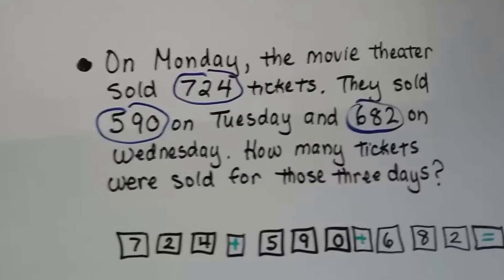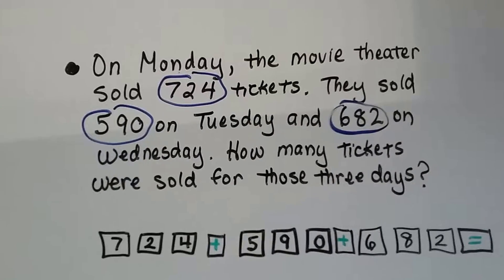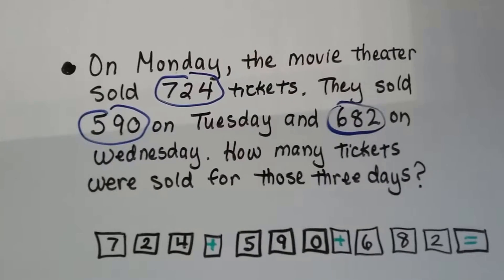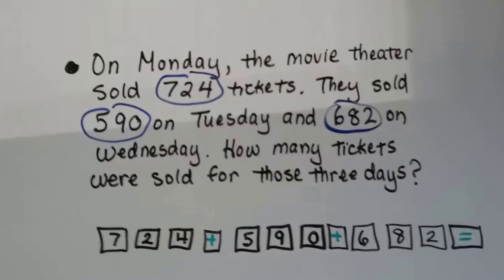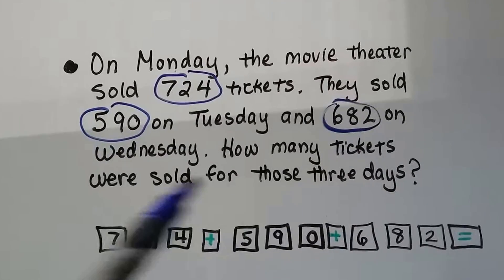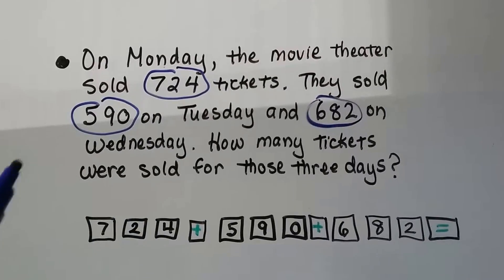Now it says, on Monday, the movie theater sold 724 tickets. They sold 590 on Tuesday and 682 on Wednesday. How many tickets were sold for those three days? So we need to combine all the tickets sold for those three days to get the answer we know we need to add.